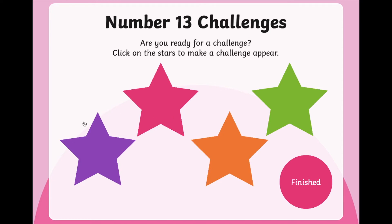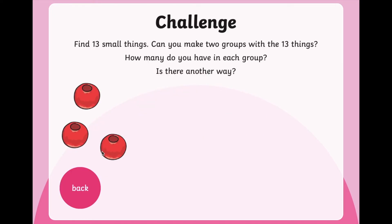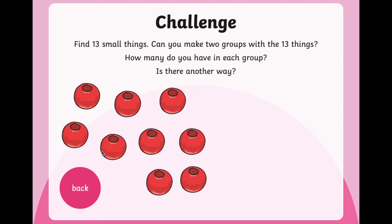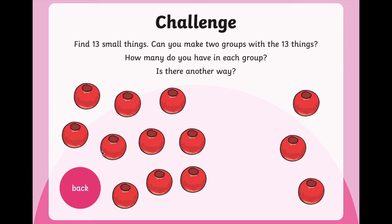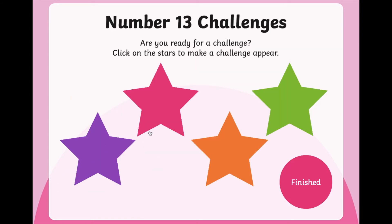The first challenge is: find 13 small things around your house. Can you make two groups with those 13 things? Split them in any way you want and tell me how many are on either side. For example, there could be ten on one side and three on the other, but I wonder if you could find another way to split 13 into two groups.